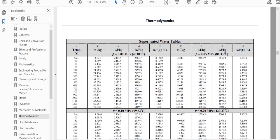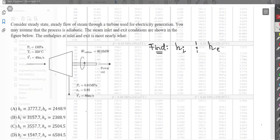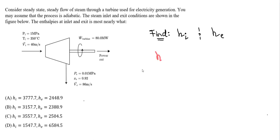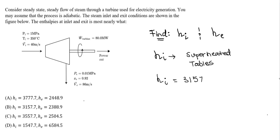The value is 3,157.7 kilojoules per kilogram. So from the superheated tables, our h_i value is around 3,157.7 kJ/kg. This is obviously answer C — if this were on the FE exam, you could just pick C and be done. But I want to also solve for the enthalpy at the exit.